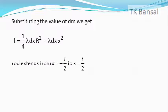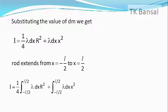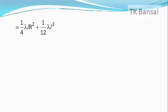Since the rod extends from x equals minus l by two to x equals l by two, integrating both sides between these limits we get i equals one by four integration from minus l by two to l by two of lambda dx into r squared plus integral from minus l by two to l by two of lambda dx into x squared, or i equals one by four lambda r squared into l plus one by twelve into lambda l cubed.